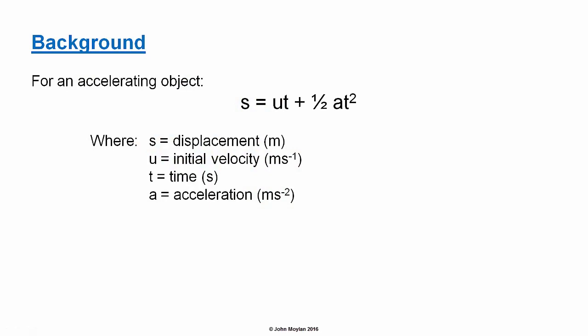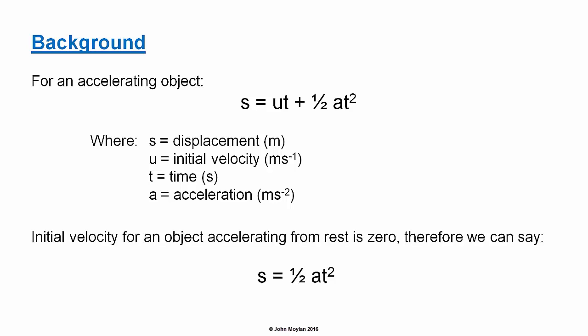A bit of background: from your previous studies in physics you should remember the equation s = ut + ½at², where s is displacement in meters, ut is initial velocity multiplied by time, and ½at² is one half times acceleration in meters per second squared multiplied by the time squared. The initial velocity for an object accelerating from rest is zero, so we can simplify this equation to s = ½at².